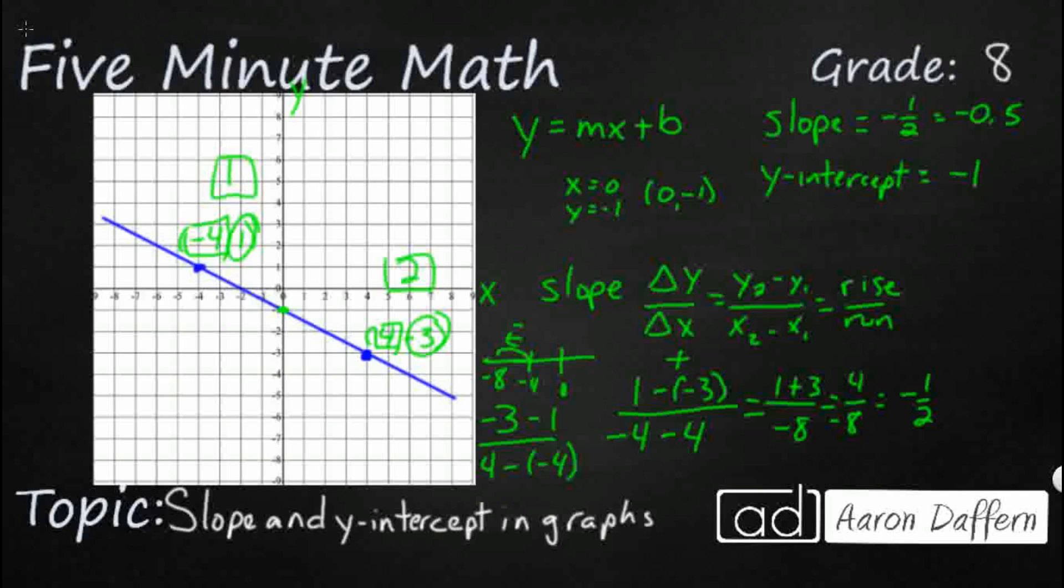Well, what would happen there? Well, as you can see here, we're going to end up getting, that's going to be negative four. Four minus negative four, that's the same as four plus four. Look at that, negative four over eight, that's still going to equal negative one half.